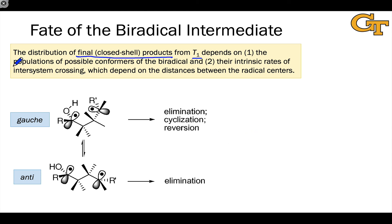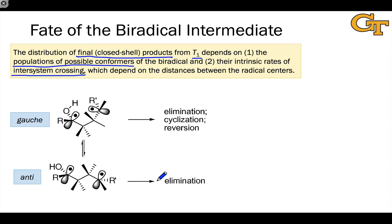The first factor is the population of possible conformational isomers of the biradical — what conformations are accessible and what are their relative populations when reaction events take place. The second is the intrinsic rate of intersystem crossing in each of those conformations, which we should expect to differ. For example, gauche and anti conformers would be expected to have different rates of intersystem crossing because they have different distances between the radical centers.